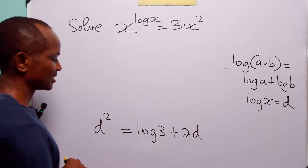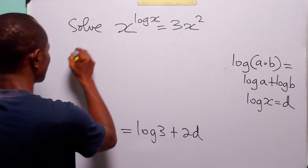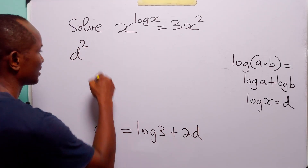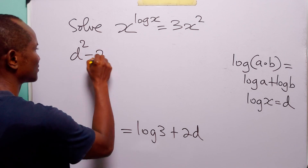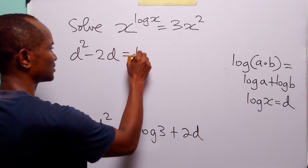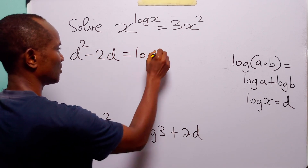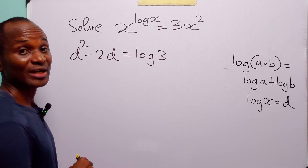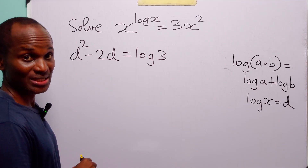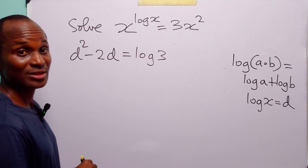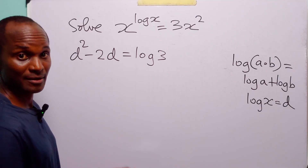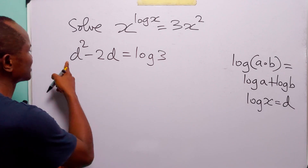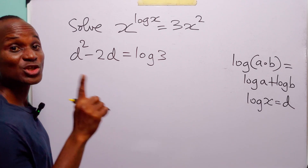When we rearrange this equation, we have d² - 2d = log 3. We cannot factorize this quadratic equation, so let us solve by completing the square method.